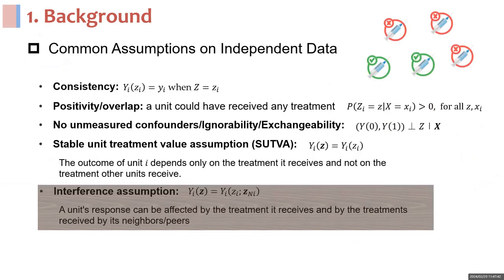In most causal inference settings, we often rely on some assumptions. These include the consistency of treatment effect, the overlap in treatment groups, and no unmeasured confounders. Additionally, an important assumption is the stable unit treatment value assumption, or SUTVA. This states that the outcome of unit I depends only on the treatment it receives, and not on the treatment other units receive.